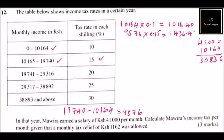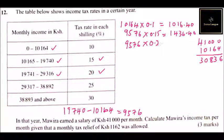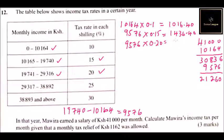For the third bracket, we subtract nineteen thousand seven hundred and forty from twenty-nine thousand three hundred and thirteen, which also gives nine thousand five hundred and seventy-six. We subtract the previous bracket amount from the salary, leaving twenty-one thousand two hundred and sixty. Multiplying nine thousand five hundred and seventy-six by twenty percent gives one thousand nine hundred and fifteen shillings twenty cents.